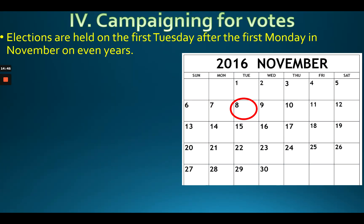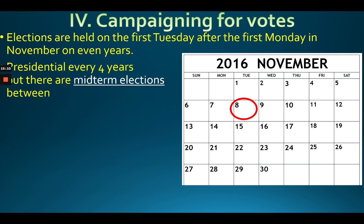The presidential election is on the first Tuesday after the first Monday in November every four years — that's in the Constitution. Usually around November 5th through 8th. The president runs every four years, but in the other even-numbered years there are midterm elections, which means the president is not running.